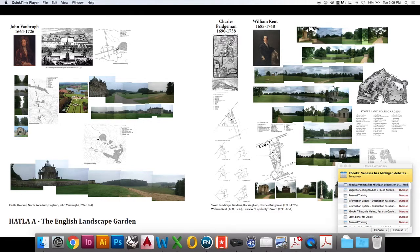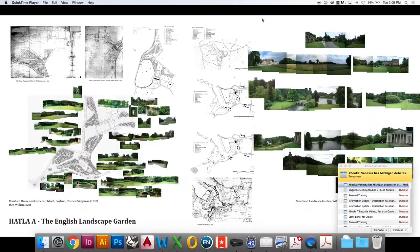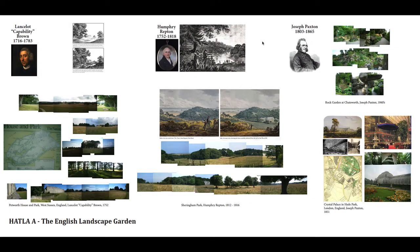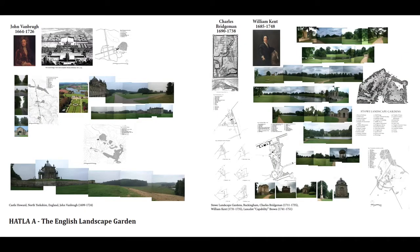Today we're going to talk about the English Landscape Garden. We've already been talking about the way that the zero point works, and I also introduced some of the English Landscape Garden to you in relationship to Australia — how the English settlers turned up to Australia and were surprised that the landscape looked as similar to the English landscape at the time as it was.